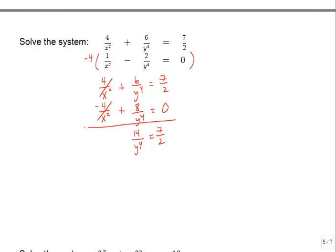Cross-multiplying gives 2 times 14 equals 28 on the left and 7y to the fourth on the right. Dividing through by 7: y to the fourth equals 4. To finish solving for y, we take a fourth root and need a plus or minus symbol since this is an even root—just as with square roots we need plus or minus. So y equals plus or minus the fourth root of 4.